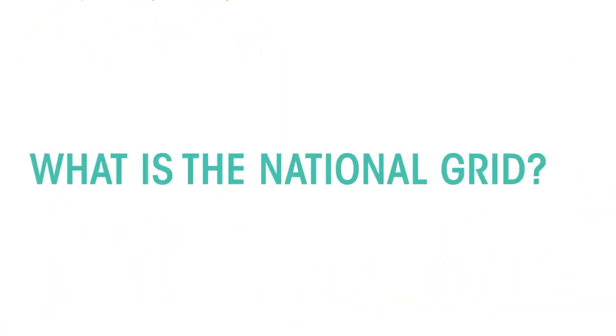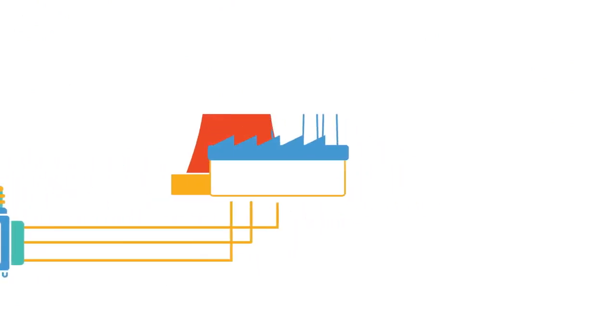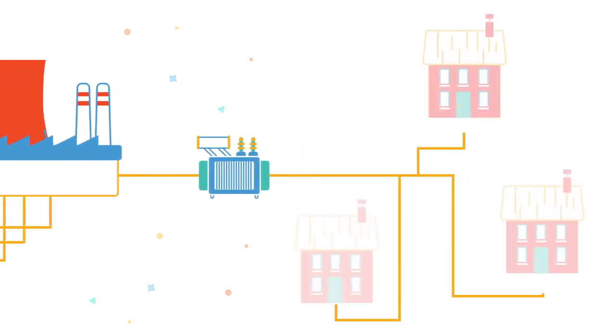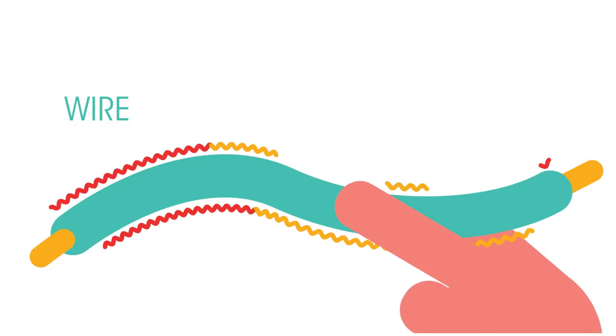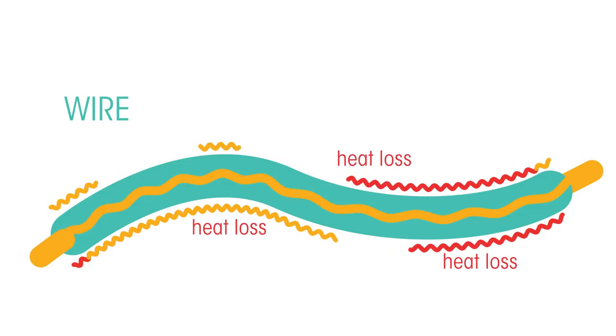So, what exactly is the national grid? The national grid is a system of cables and transformers linking power stations to consumers. Have you ever felt an electrical wire and noticed it gets hot? This is because some energy travelling through the wire is lost as heat.